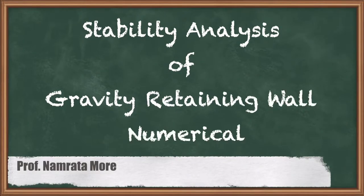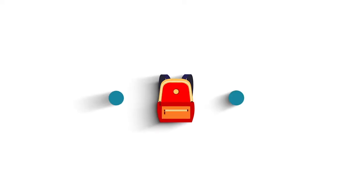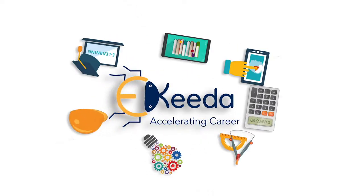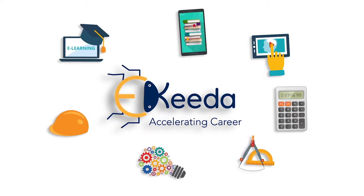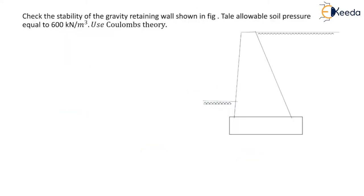Hello everyone. In this video we are going to discuss stability analysis of a gravity retaining wall from the chapter earth pressure theory. Check the stability of the gravity retaining wall shown in the figure. Take allowable soil pressure equal to 600 kN per meter cube. Use Coulomb's theory.